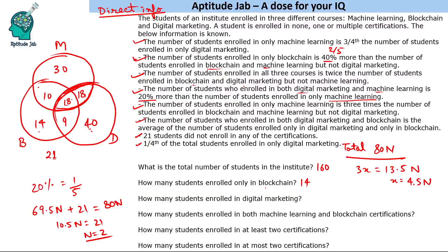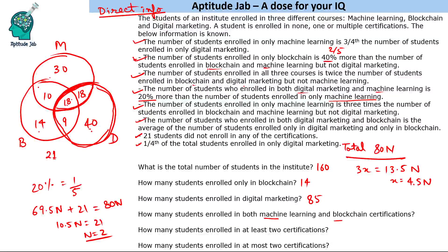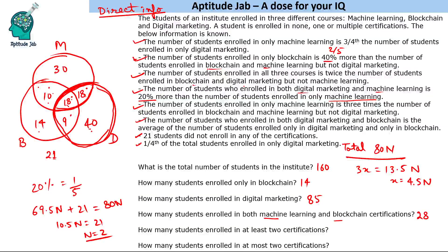How many students enrolled in Digital Marketing? When it says Digital Marketing, calculate the total circle — not just 'only' Digital Marketing. That's 36 plus 49 equals 85. How many enrolled in both Machine Learning and Blockchain? Since it doesn't say 'not Digital Marketing', we include all overlapping regions: total is 28, including 18, giving a combined answer of 28.